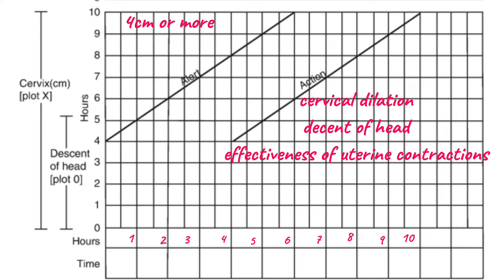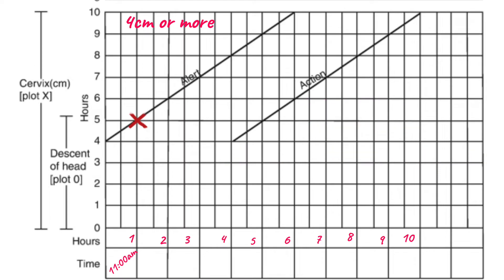Let's assume our patient came at 11 a.m. We record 11 a.m. here. If cervical dilation on vaginal examination was 4 centimeters, our first plot on the partograph will be on the alert line. If the cervical dilation was 5 cm when the patient arrived, we record time 11 a.m. and plot 5 centimeters — it still has to be on the alert line.